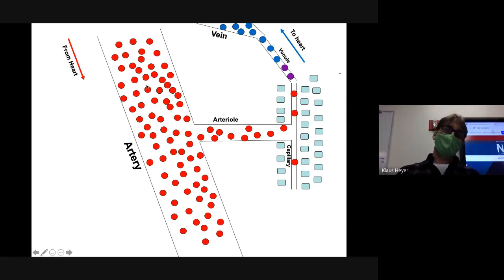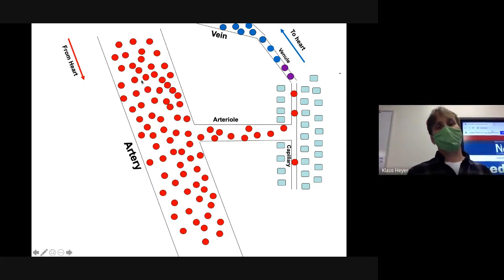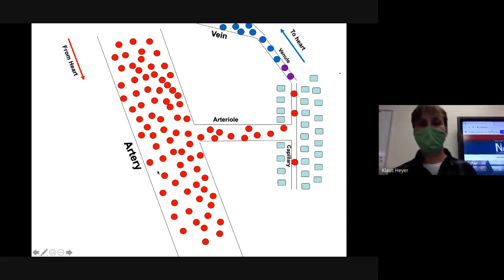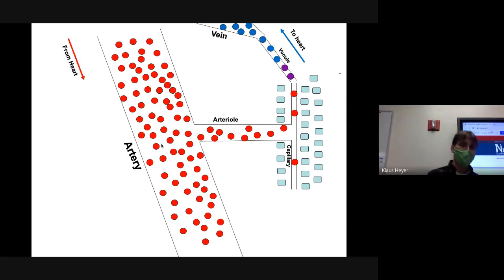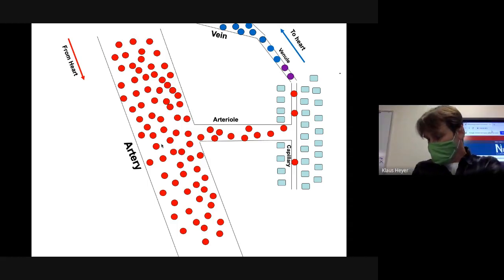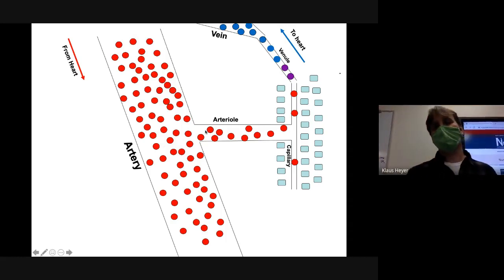From the heart, you have arteries, and arteries tend to be large — because this chapter is on blood vessels — so arteries tend to be large. They tend to fit lots of blood. So this is like an interstate — that's how I kind of view it — so it fits a lot of traffic, and that traffic can go really fast. The blood that moves through an artery is going pretty fast.